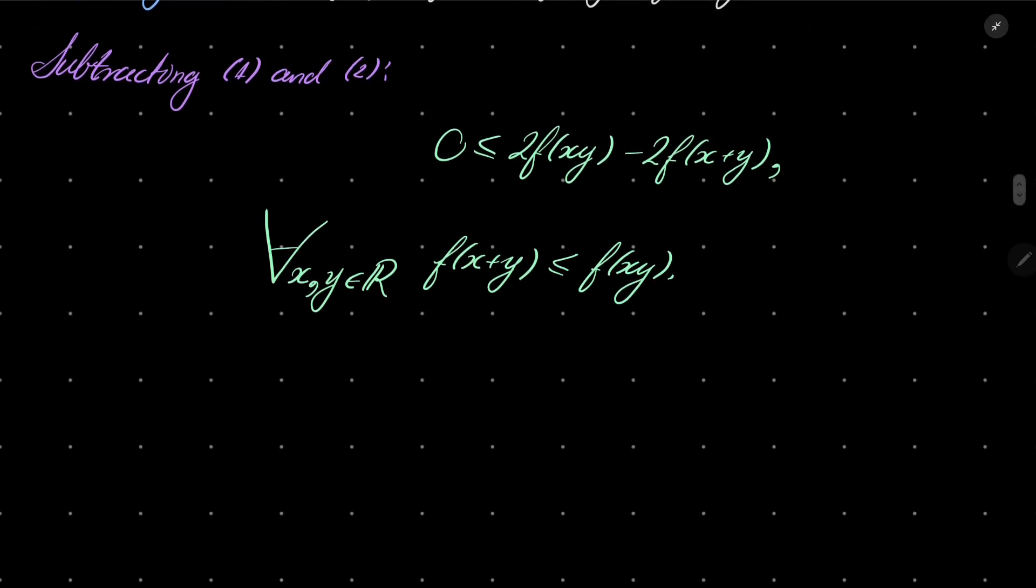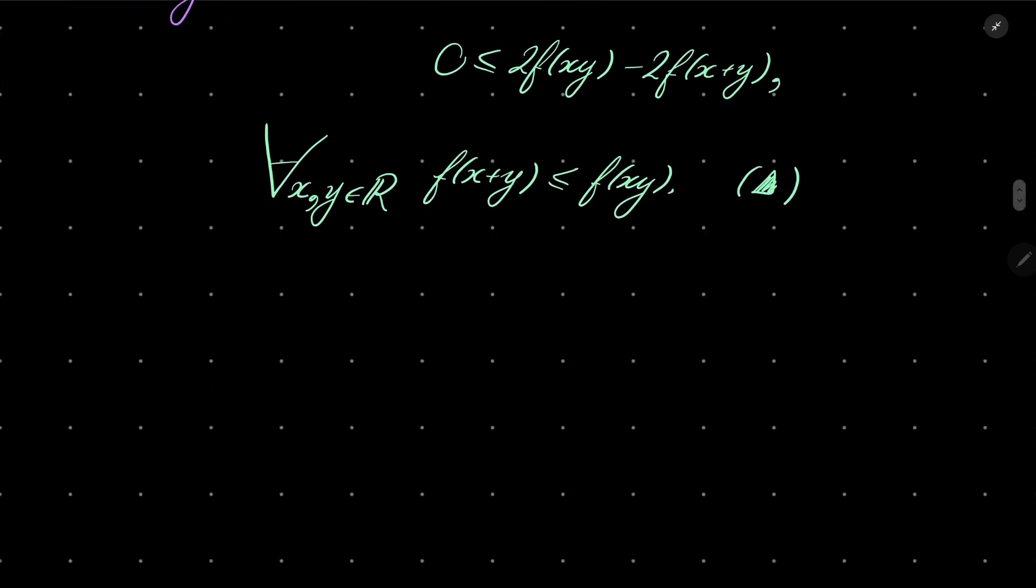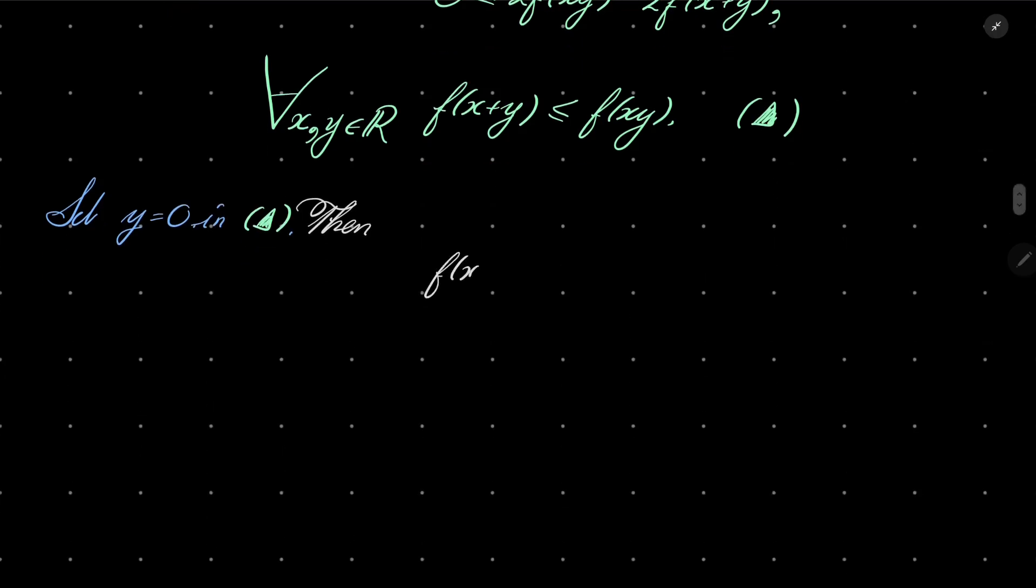For every real x and y, f(x+y) is less than or equal to f(xy). Let's mark it our condition triangle. Now it's time to set some variables. First, let's set just y to be zero in our condition triangle. We have then f(x) is less than or equal to f(0) for every x. Remember that holds for every real number x.